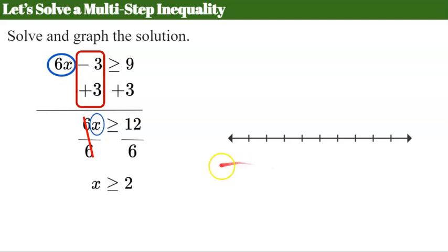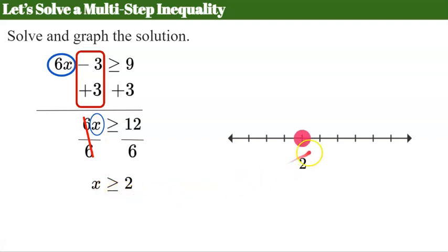We are ready to graph. I need my number line. I'm going to put my value of 2 on my number line. I need a closed circle because it can be equal to 2, and it's going to be everything shaded to the right of 2 and including 2.